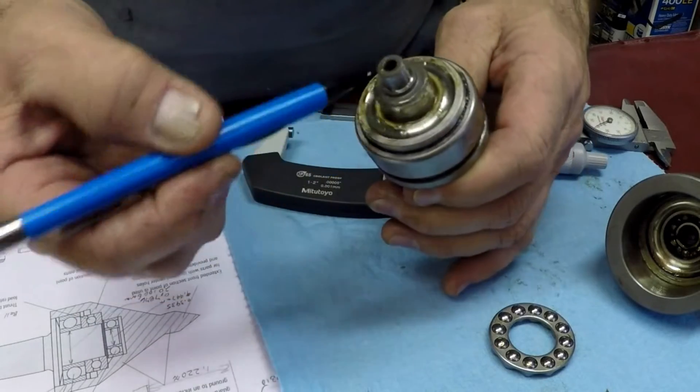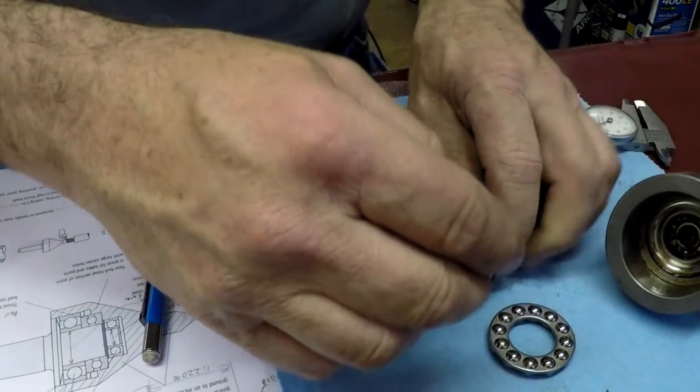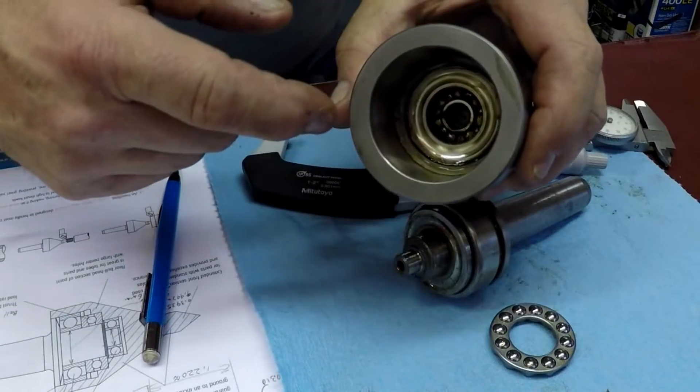So this big bearing is a NSK 6204 bearing. I don't know what the thrust bearing is, and I don't know what the small one is down inside.